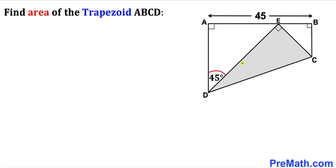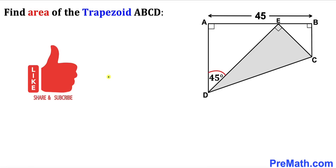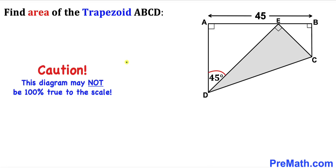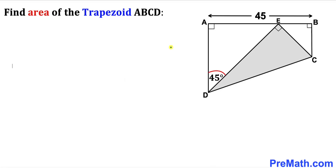Welcome to Pre-Math. In this video we have trapezoid ABCD, where side length AB is 45 units and angle ADE is 45 degrees. We are going to calculate the area of this trapezoid ABCD. Please subscribe before we proceed. Note that this figure may not be 100% true to scale.